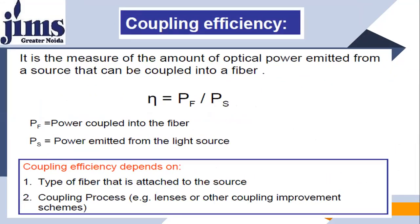Now, come to a very important term as far as coupling is concerned: coupling efficiency. What is coupling efficiency? It is the measure of the amount of optical power emitted from a source that can be coupled into a fiber. Eta is equal to PF upon PS, where PF is the power coupled into the fiber and PS is the power emitted from the light source. For example, if eta is 80%, it means that if 100% light is coming from the optical source, only 80% is coupled into the optical fiber; the remaining 20% is lost. If you have 90% coupling efficiency, out of 100% coming from the optical source, only 90% goes inside the optical fiber and the remaining 10% is leakage outside the fiber.